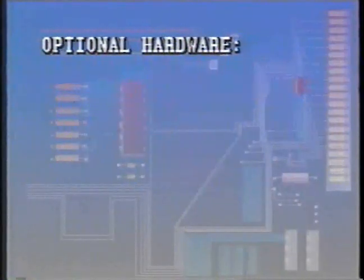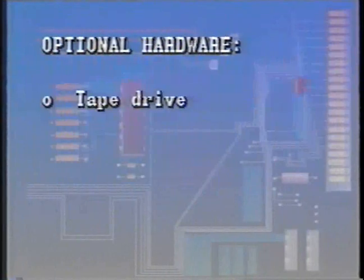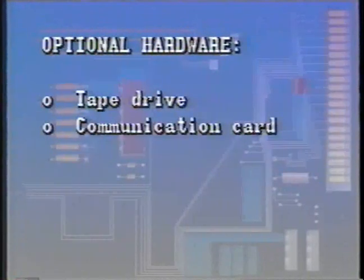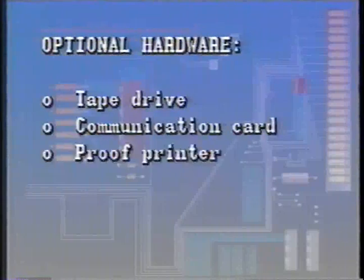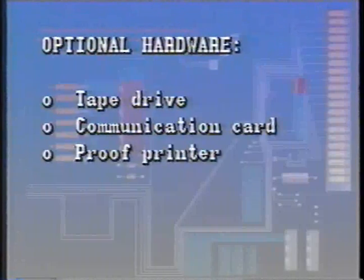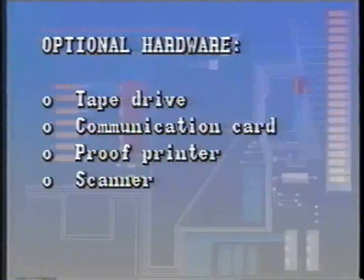Optional hardware you may have as part of your Elixir system includes a QualStar tape drive with an Overland TX-8 controller card, an IRMA communicating card and the FTTSO software to control transmission of files to the host computer, a Xerox 4045 or Hewlett Packard LaserJet Plus printer to print proof forms, and optionally a digital scanning device like the Xerox 7650 Pro Imager.